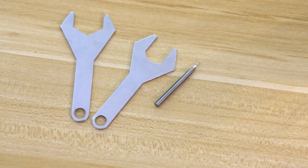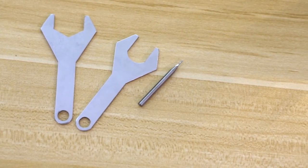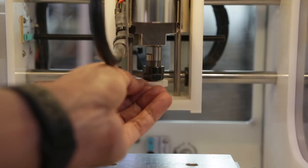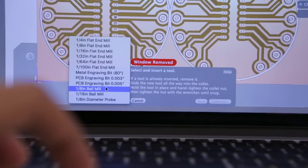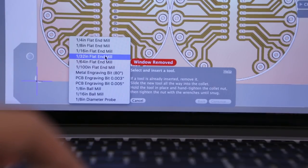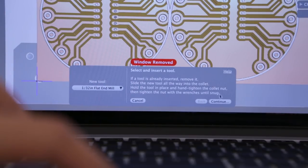My plan is to use a 1/32 inch flattened mill to do all of the milling operations. This is my go-to tool for cutting traces, holes and the board outline. Setting it up in the software configures the settings and automatically probes the spoil board.